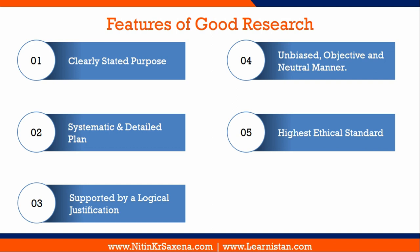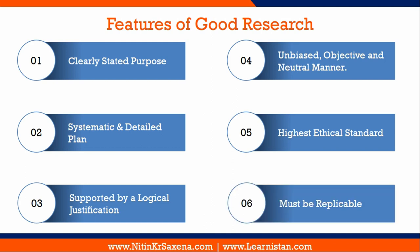The fifth feature of good research is maintaining the highest ethical standards at every stage and at any cost. The next feature is that research must be replicable. The reason for this structured, ethical, justifiable, and objective approach is that the research carried out must be replicable — meaning the process followed must be reliable. That is, if the study is carried out under similar constraints and conditions, it should reveal similar results.